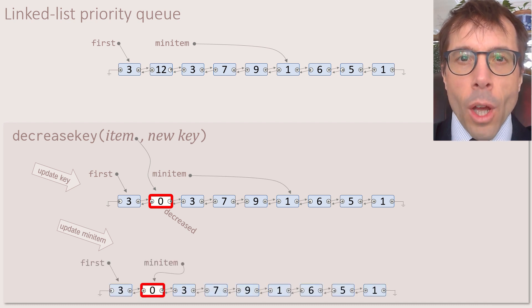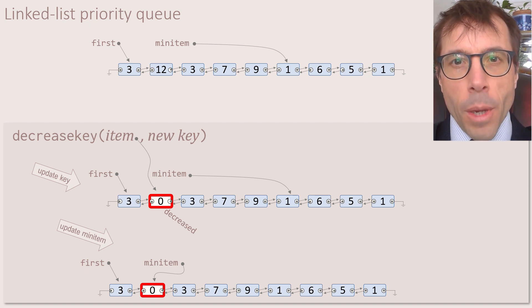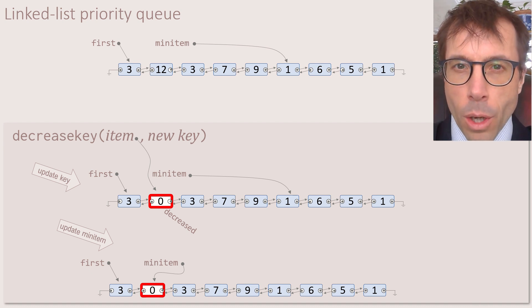Just one note about this. When we talk about decreasing the key of an item, I'm going to assume that we have somehow gotten hold of a pointer to the item whose key we want to decrease. It would be no good if all we were told was scan through the list to find such and such an item and then decrease its key, because that scan would be O of n, whatever implementation we have. I'm going to go into a bit more detail about this at the end of the video.